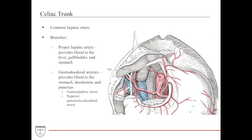On the right side of the celiac trunk is the common hepatic artery, which provides all the blood to the liver, gallbladder, and a portion of the duodenum. It provides blood via the gastroduodenal arteries to the stomach, duodenum, and pancreas, and then bifurcates into the gastroepiploic and superior pancreaticoduodenal arteries. The right and left gastroepiploic arteries provide the greater curvature of the stomach, while the left and right gastric arteries provide the lesser curvature.